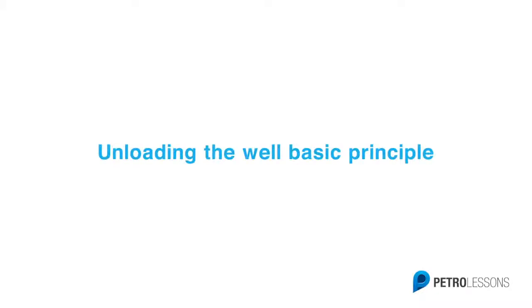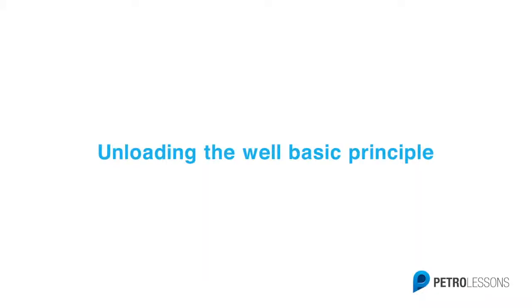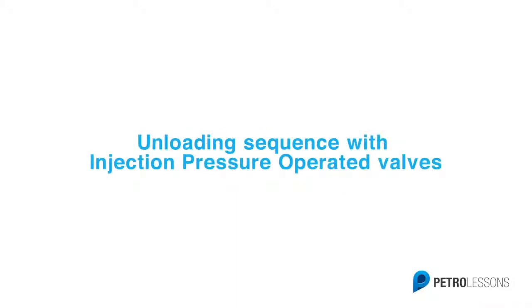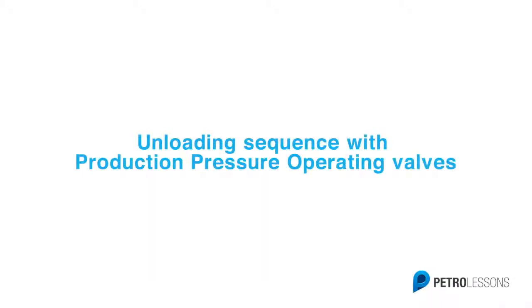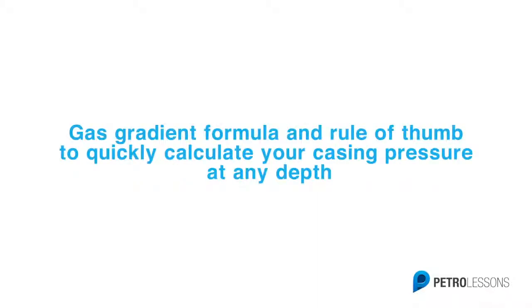By following this course, you will learn the basics of the gas lift unloading sequence. I will give you guidelines on how to perform your initial unloading following a work over or drilling, when your tubing and your casing are full of brines. We'll take a look at a detailed unloading sequence when your well is equipped with injection pressure operated valves, but also if it is equipped with production pressure operated valves. We'll then review the gas gradient formula so that you are able to calculate the casing pressure at any depth in your well.